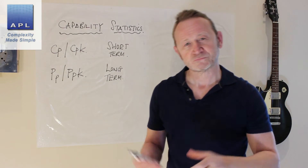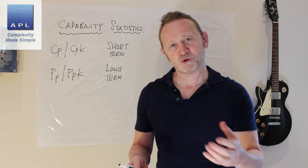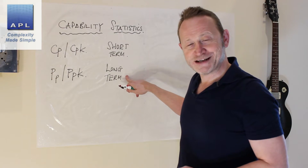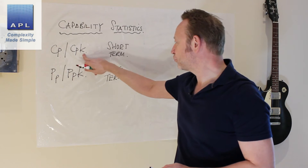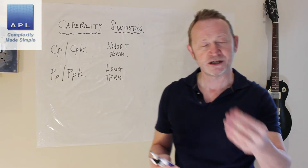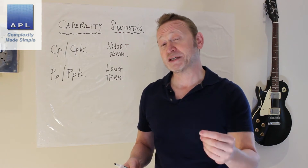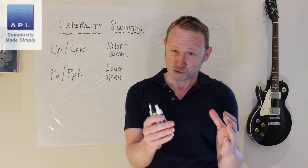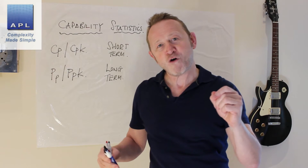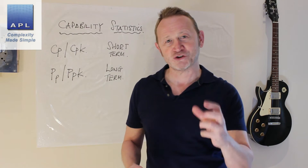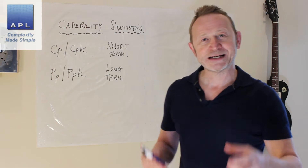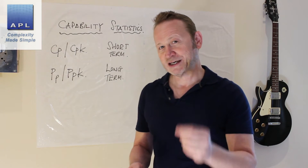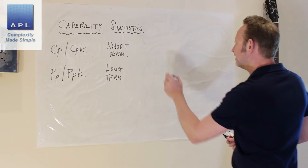Now, CPK versus PPK — what's the difference? The difference is not in the way the data is collected. Short-term and long-term capability — it sounds like it refers to how the data was collected, whether over a short or long period. That's not correct. Short-term and long-term is actually about the way the calculation is done — specifically, the way standard deviation is calculated.